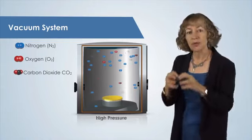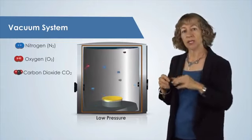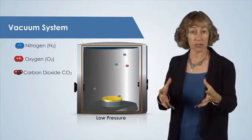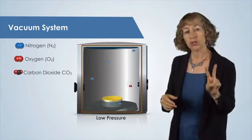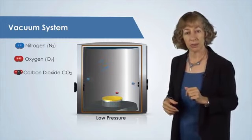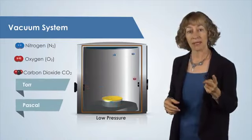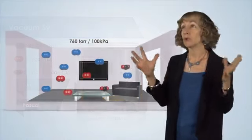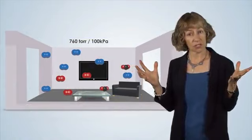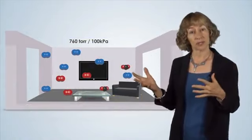As we remove the air from the chamber, we can measure just how much air remains by measuring the pressure. Two common units of pressure used in laboratories are torr and pascal. A normal room has a pressure of 760 torr or 100 kilopascal.